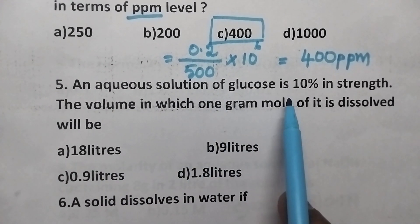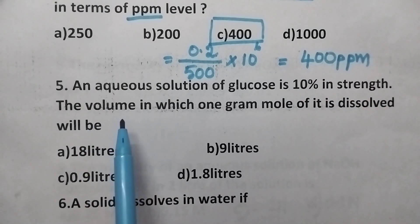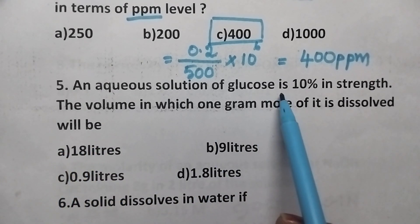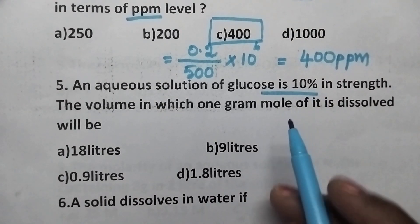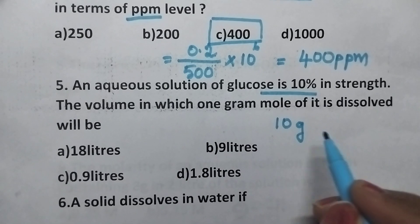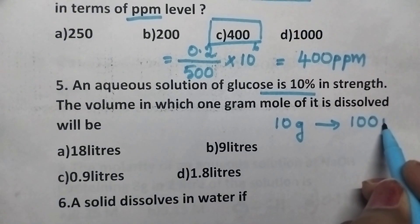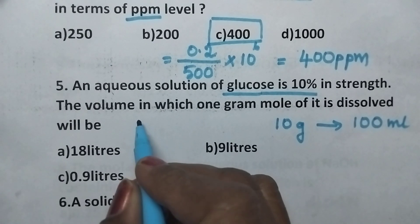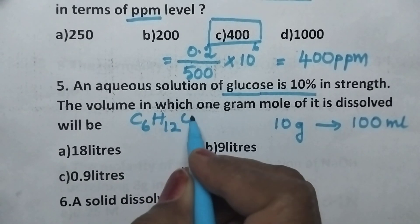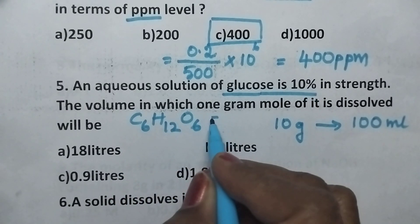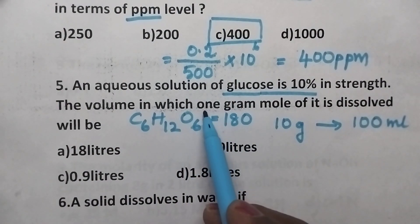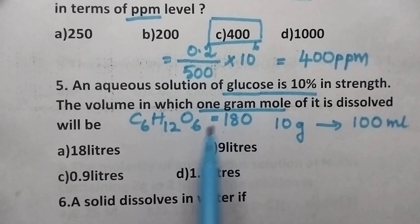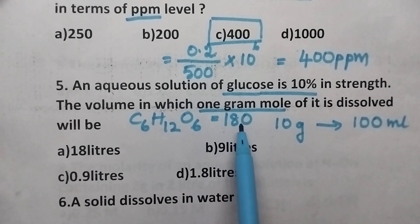An aqueous solution of glucose is 10% in strength. The volume in which 1 gram mole of it is dissolved will be? 10% means 10 grams of glucose is dissolved in 100 ml of the solution. The substance is glucose, so the molecular weight of glucose can be calculated from its formula C₆H₁₂O₆, and it will be 180. Here, 1 gram mole of the substance is dissolved.